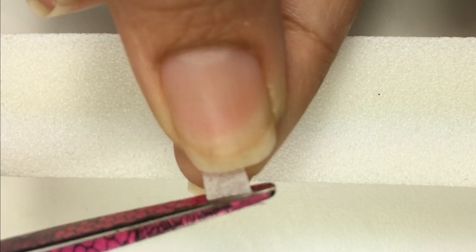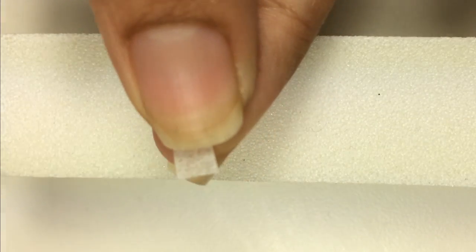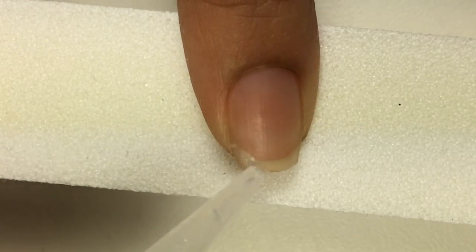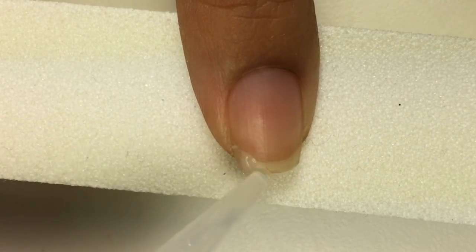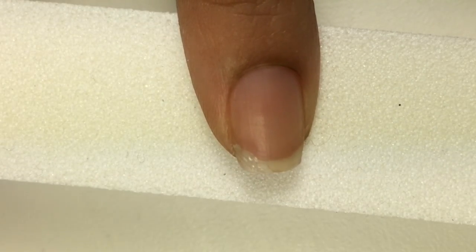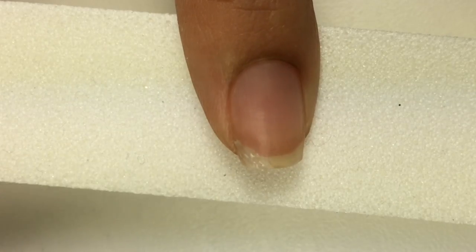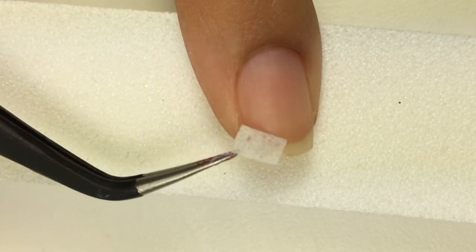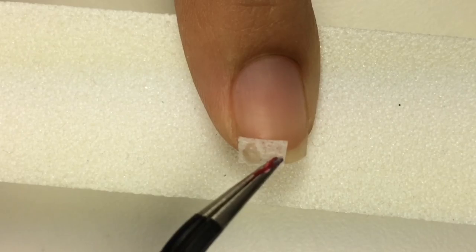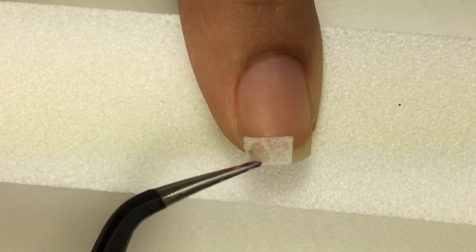I'll trim down the piece of toilet paper to fit my nail, apply the super glue, and then put the toilet paper on top of the break for the bond. Then you want to secure it in place.